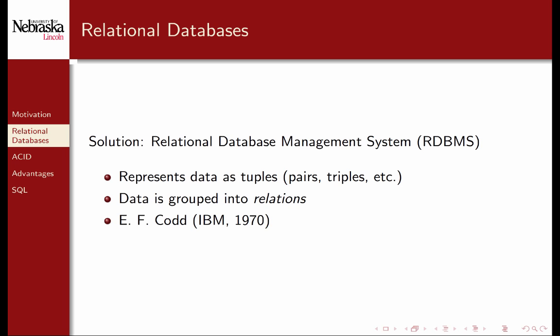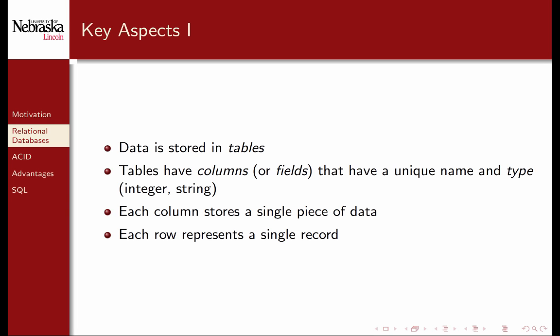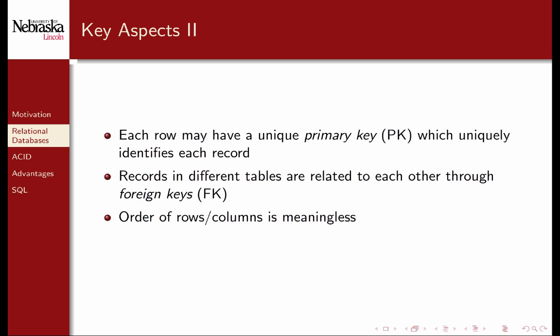The solution to all of these problems is to use a relational database management system. An RDBMS represents data as tuples stored in tables. Such a system associates data between tables using relations. This model was first developed by Edgar Codd in the early 70s at IBM. Each table in a database has columns and rows. Columns, also called fields, have a unique name and data type. A column could hold integers or strings, for example. Each column represents a single piece of data, while each row represents a single record or tuple of data. Each row may have a unique primary key, or PK for short, which identifies each and every record that exists or may exist in the future. The value of a primary key in a table cannot be the same for any two records.